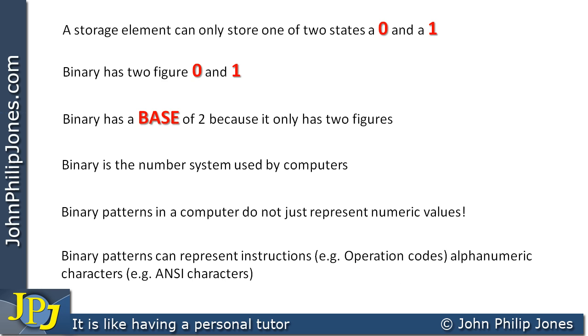They also, within a computer, have alphanumeric characters. Now, when you type anything at the keyboard, you will find yourself typing an A, for example, and that generates a binary pattern within a computer. And if you converted that pattern to our number system, it's the number 65. If you typed in capital B, that's the number 66 in our number system, but that would generate a binary pattern.